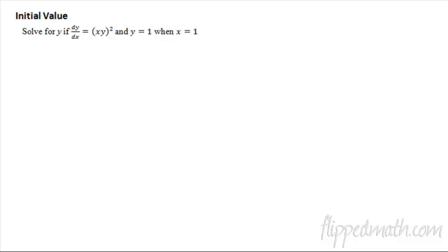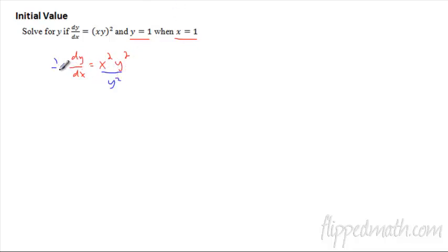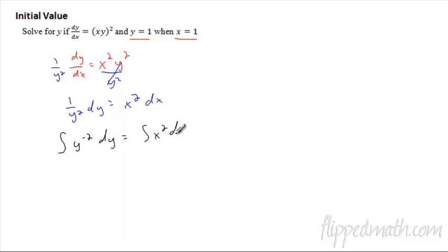Now we've been finding the generic plus-c antiderivative. Now I want to solve for y with an initial value — I'm going to give you something from the original function, give you some points, so we can actually evaluate it and find the specific equation. So if I have my derivative, I need my y's over there, so I'm going to divide by y squared. So it's 1 over y squared dy, bring the dx over. Now let's integrate: y to the negative 2 dy. I'm going to bump it up one, which gives negative 1, divided by negative 1. This turns into x cubed divided by 3, so I get one-third and plus c.